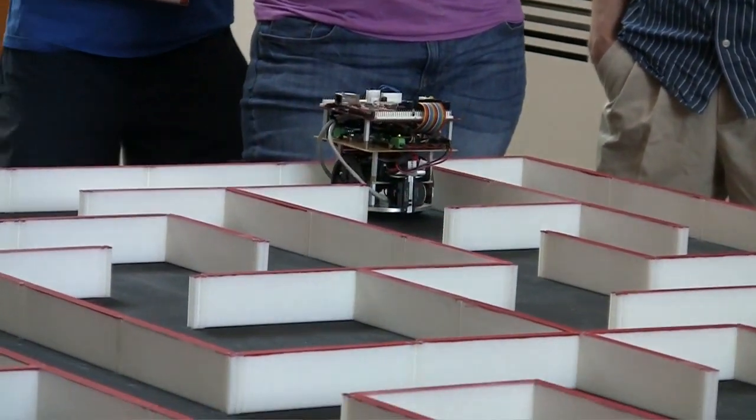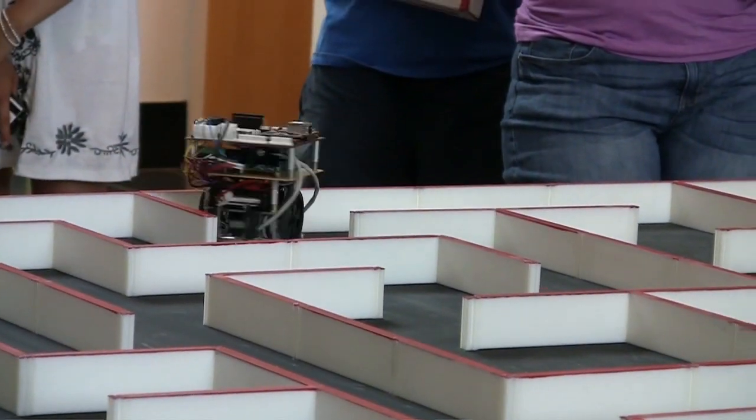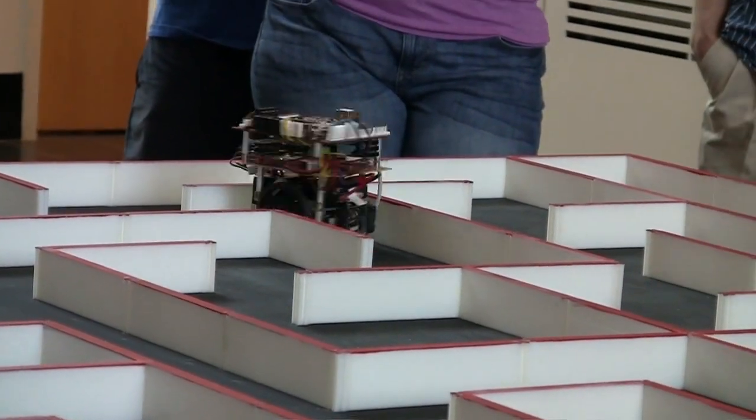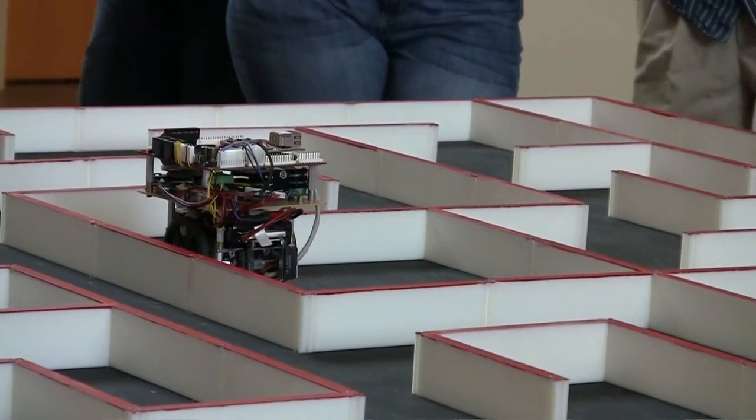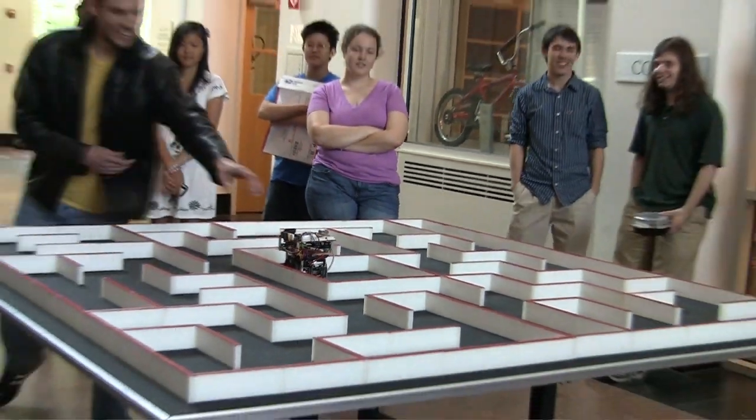And so from there, you build up a map of the maze as you go along and there's sensors on three sides of the robot, so it sees walls. And as it discovers walls, it creates a map and it uses that map in the search algorithm to find the optimum path.